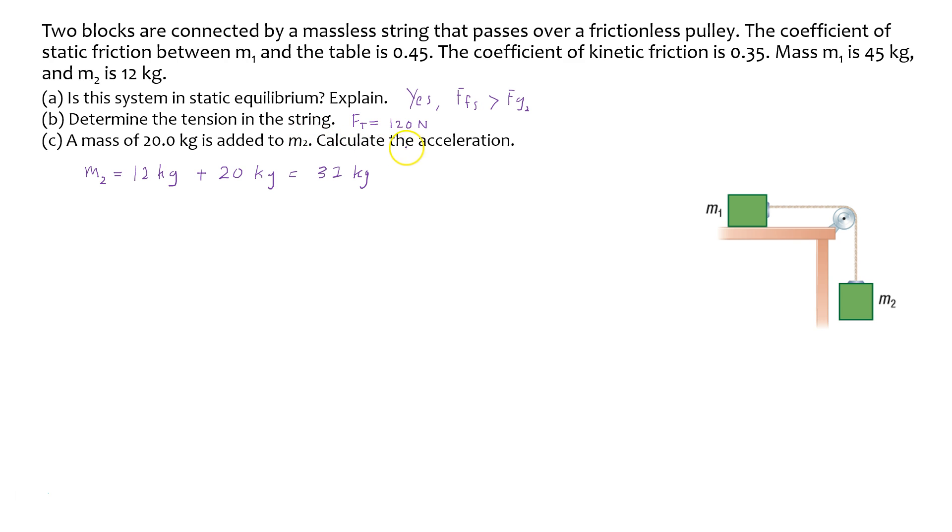To determine the acceleration of the system, I'm going to first write F_net statements for each block. Starting with the first block, I'm going to draw the forces acting on it: Ft (tension force), normal force, Fg1, and Ffk.